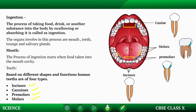Molars are the last three teeth on each side in each jaw. They have a broad, uneven surface for finer crushing and grinding. Primary crushing and grinding is done by premolars, and final crushing and grinding is done by molars. The last molar on each side of each jaw is called the wisdom tooth.